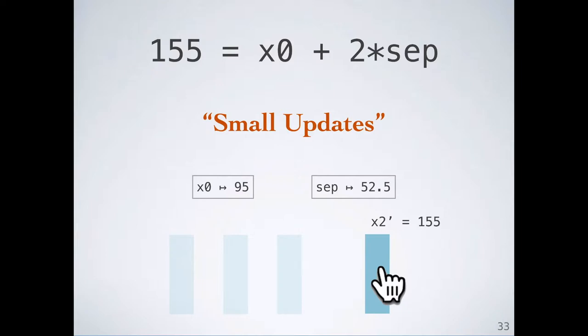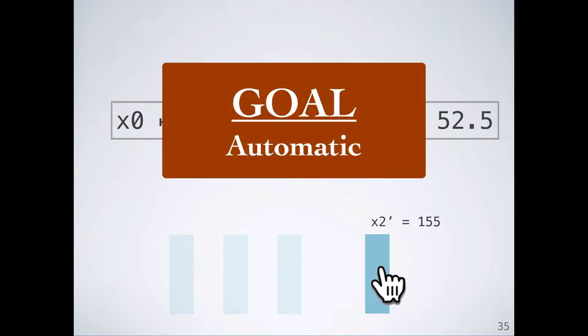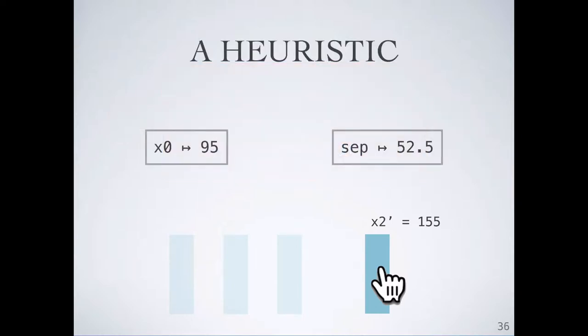Still, a question remains. Should we change x0 or sep? Although we could ask the user what to change, remember that one of our goals was not to interrupt the workflow. Instead, we rely on a heuristic to choose what to change automatically. In this particular case, the heuristic chooses x0 to change. Let's talk about how it makes that choice.